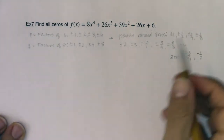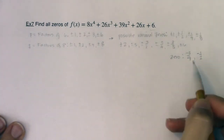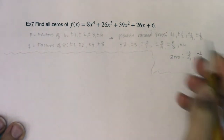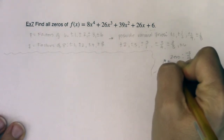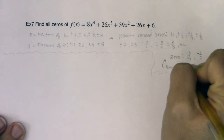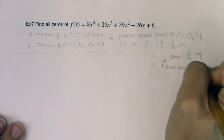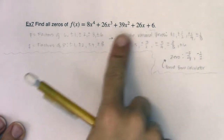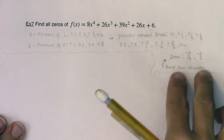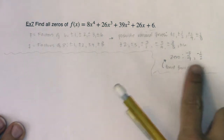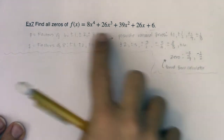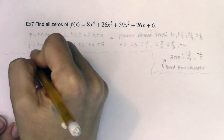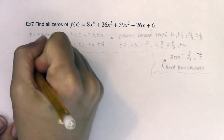It doesn't matter what order you go in — you could do negative three fourths first or negative one half, or vice versa. I'm just going to start with negative three fourths. I got these from the calculator. If there's no calculator, use synthetic division on that list of numbers till you find a couple that hit. I was able to find two from my calculator, which is great because since I could find those two, I know I'm going to be able to knock this down to a quadratic and either factor or use the quadratic formula.